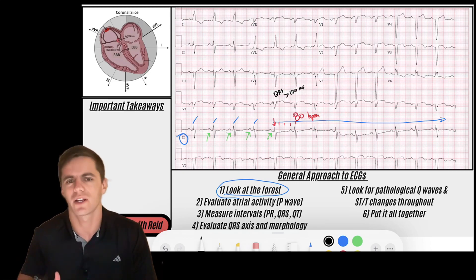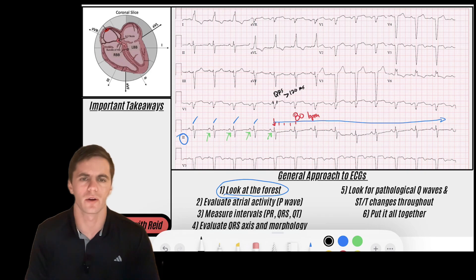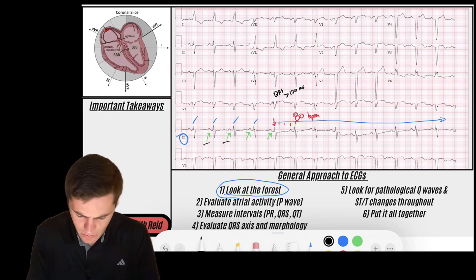So it's not a wide complex tachycardia, it's a wide complex rhythm. We think of a sinus rhythm with a bundle branch block or some type of ventricular rhythm like an accelerated idioventricular rhythm. But we said we maybe got some P waves here, so let's check out those P waves.